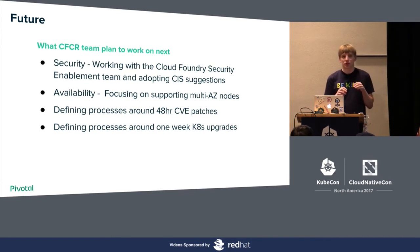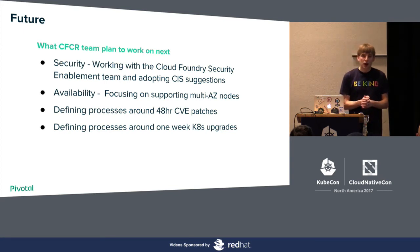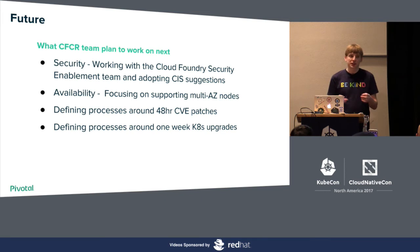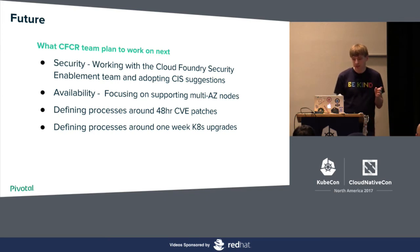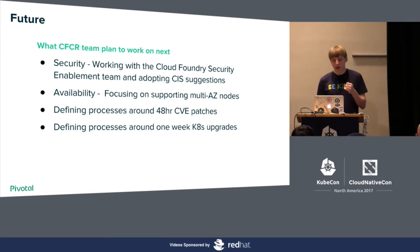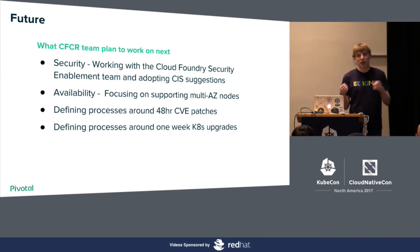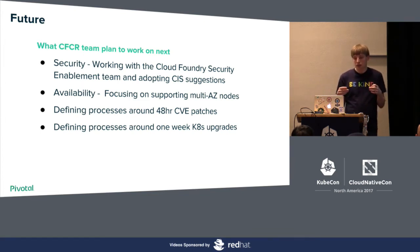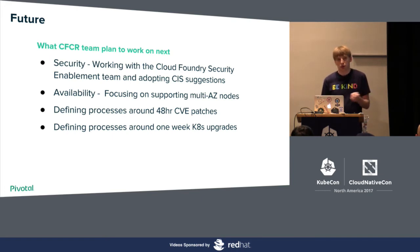What CFCR focuses on after 0.10: security, and availability — specifically multi-AZ. Some customers are already running in multi-AZ setups, but we want to test it in the pipeline so it's verified and all the affinity and anti-affinity rules work correctly. Then we want to define a process for 48-hour CVE patches: if a CVE happens in Kubernetes, Docker, or etcd, we can patch and update it, potentially automating the process. And then define a process for one-week CVE upgrades, possibly partially automated.